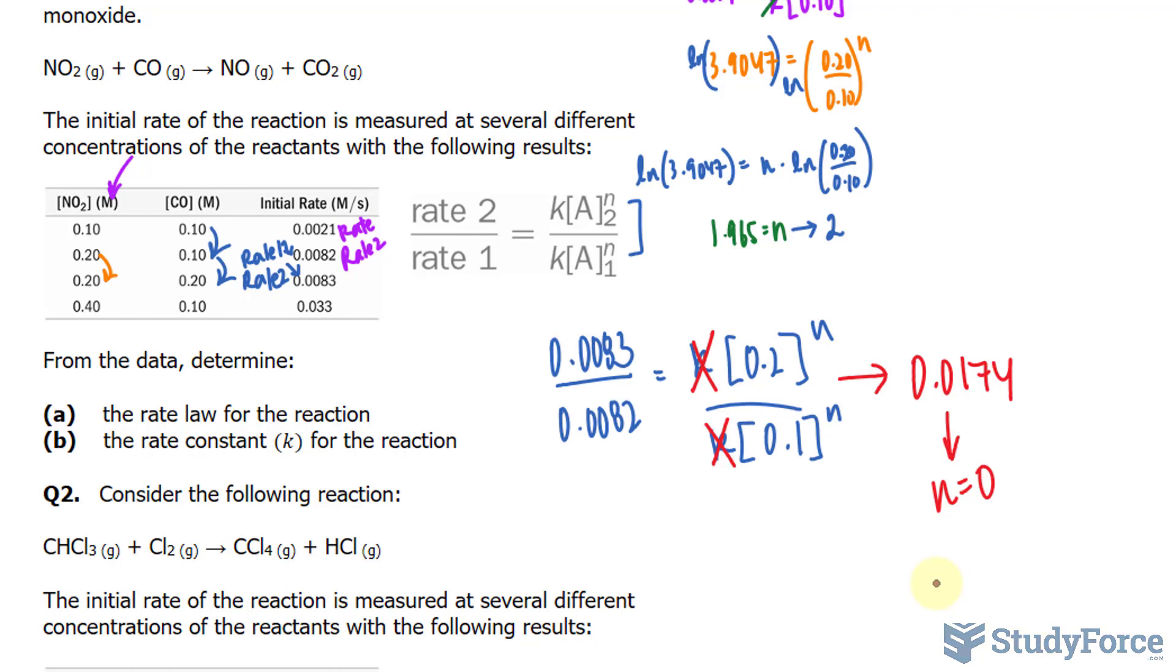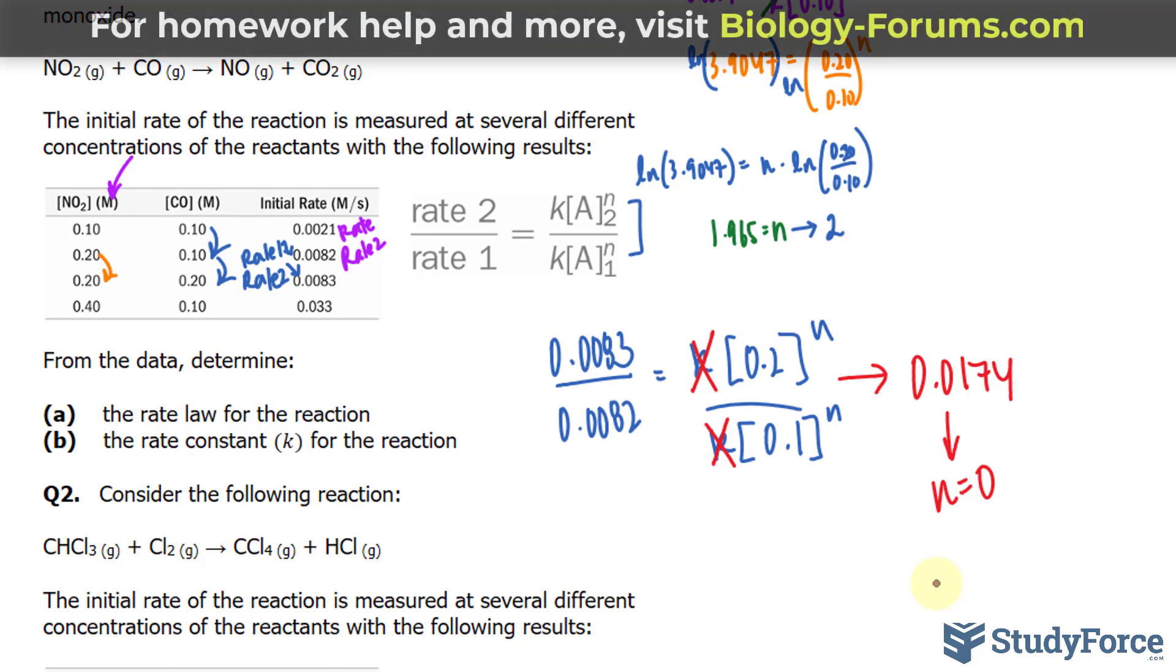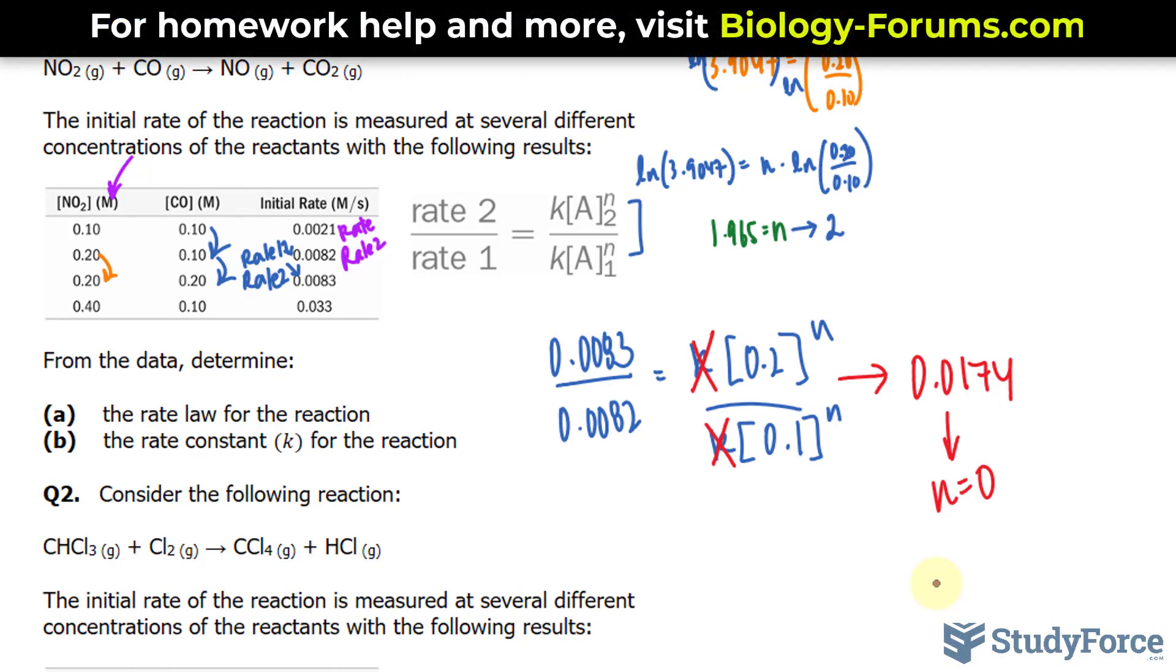For part B, to determine the rate constant for the reaction, we have to solve the rate law for k and substitute the concentration and the initial rate from any one of the four measurements. So to make things simple, we'll use the first measurement.